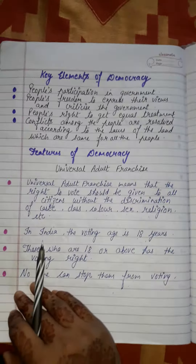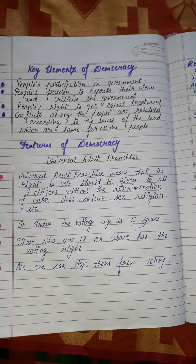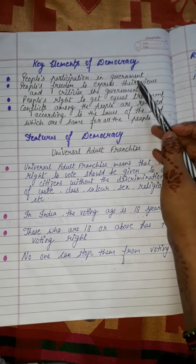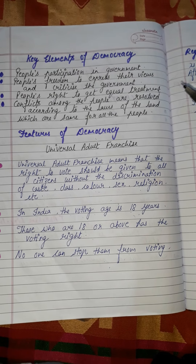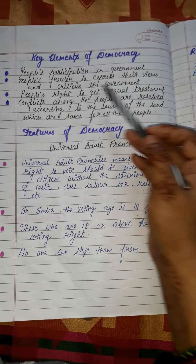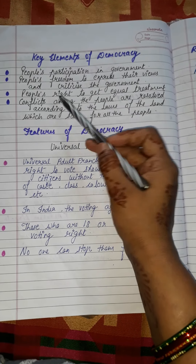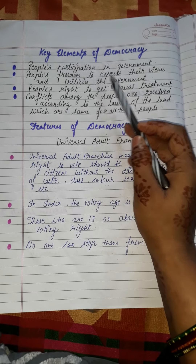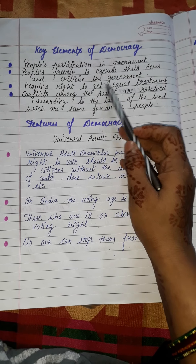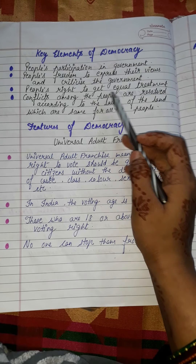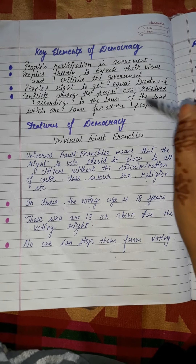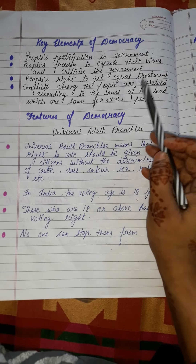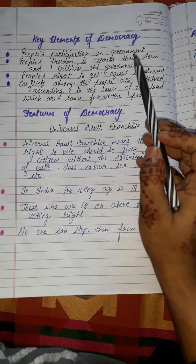Now, what are the key elements of democracy? First, people's participation in government — people zarur participate karte hain government ko elect karne ke liye. Second, people have the freedom to express their views and criticize the government. Third, people have the right to get equal treatment — every person has the right to equal treatment in our country.